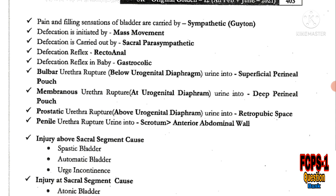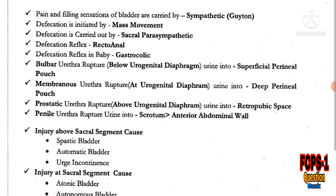Important MCQs regarding urethral injury: bulbar urethra rupture below the urogenital diaphragm causes urine to escape into the superficial perineal pouch. Membranous urethra rupture at the urogenital diaphragm causes urine to leak into the deep perineal pouch. Prostatic urethra rupture above the urogenital diaphragm causes urine to leak into the retropubic space. Penile urethra rupture causes urine to leak into the scrotum, or choose anterior abdominal wall if scrotum is not an option.